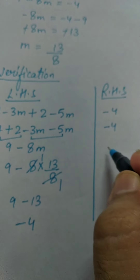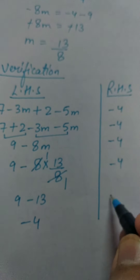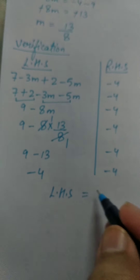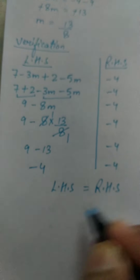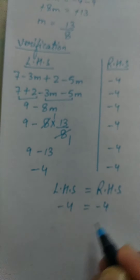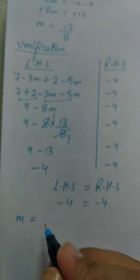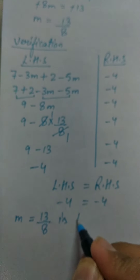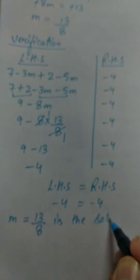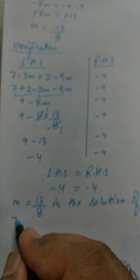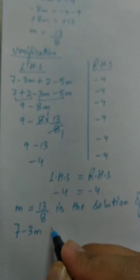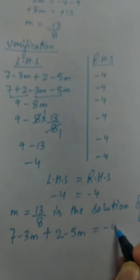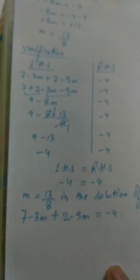In RHS, you have minus 4. So LHS is equivalent to RHS — minus 4 is equal to minus 4. So M is equal to 13 upon 8 is the solution of 7 minus 3M plus 2 minus 5M equal to minus 4. I hope it is clear to all of you.